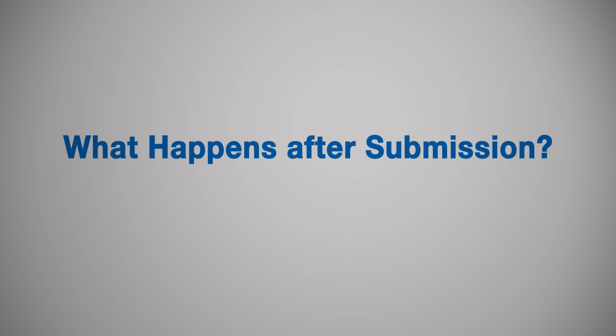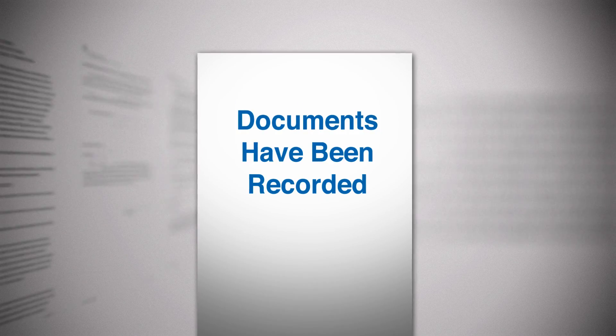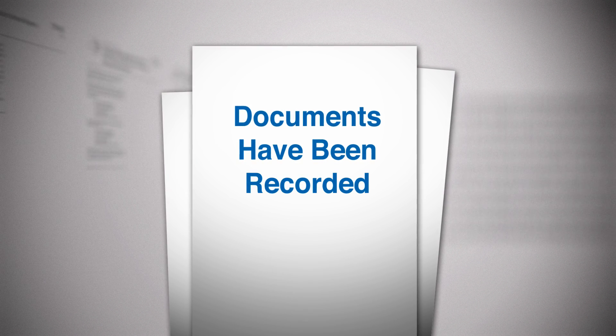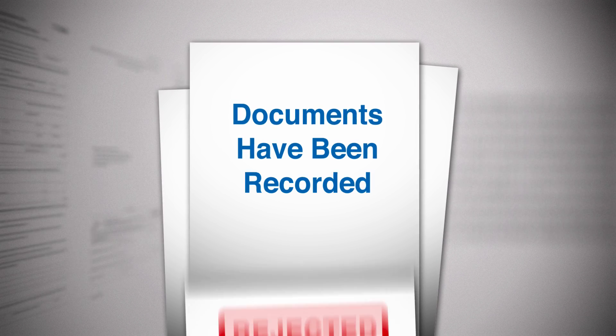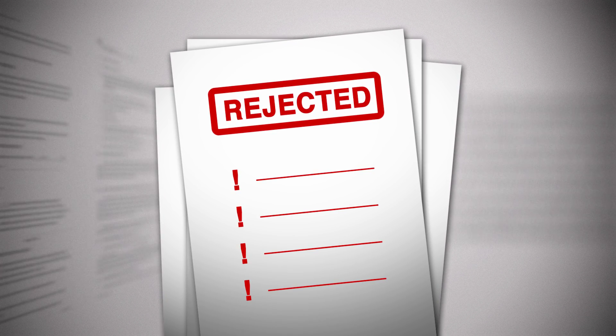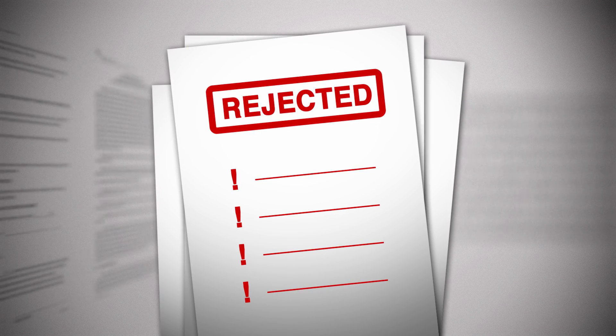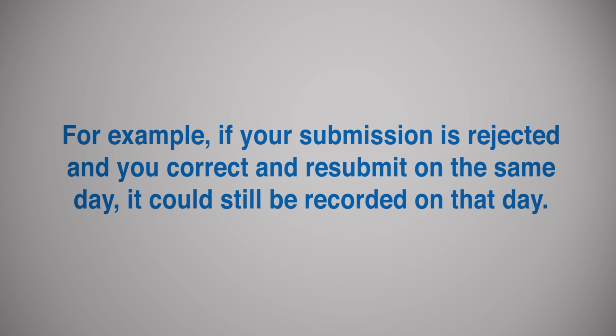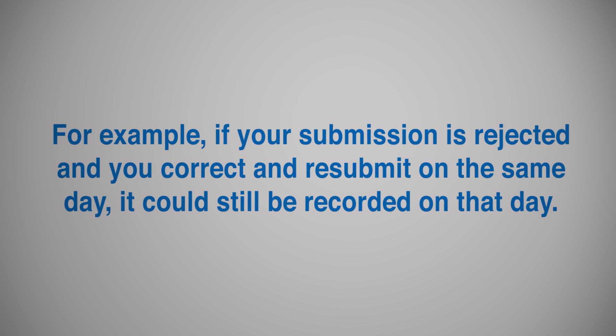What happens after submission? After the submission, your document image will be transmitted electronically to the City Register to be reviewed by an examiner. Once reviewed and the documents are recorded, you'll receive a letter stating that your documents have been recorded, along with the recording and endorsement cover pages. If the documents have been rejected, you'll receive a rejection letter indicating the reason for the rejection. The advantage of e-submission is that if your documents are rejected, you can immediately correct and resubmit them, and they'll go back to an examiner in the order in which they were received the first time. For example, if your submission is rejected and you correct and resubmit on the same day, it could still be recorded that day.